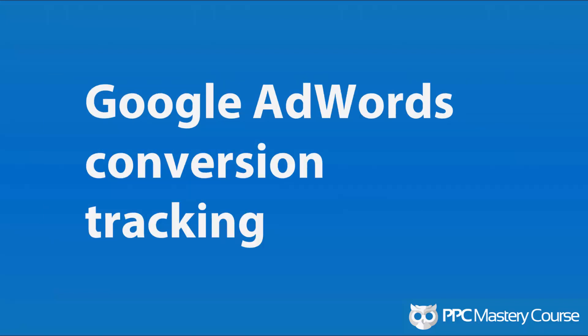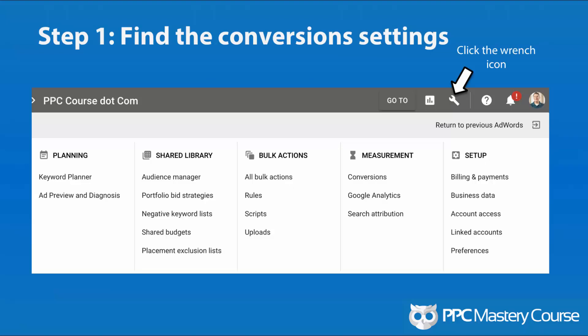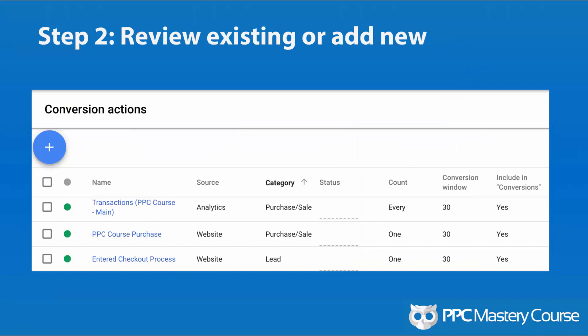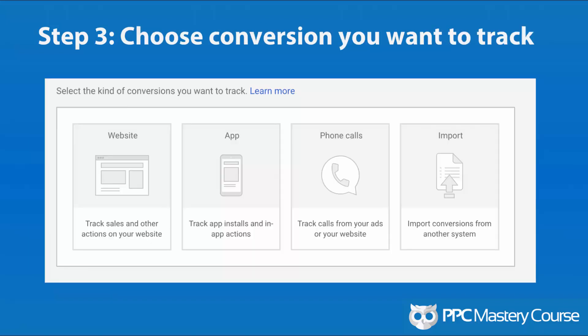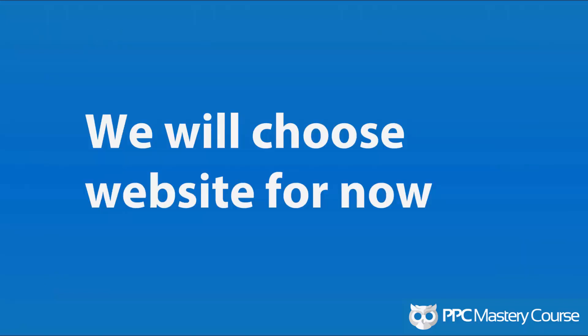Let's go through the steps of setting up Google AdWords conversion tracking. Step one: find your conversion settings in AdWords. This is buried in the new interface under a wrench icon — you click on that wrench and then select conversions. Step two: you're going to review your conversions that exist right now or add new ones. If you're just getting started with AdWords conversion tracking, you're going to click on that blue button to add new ones. Otherwise, if you've been running ads for a while, you can see how things have been working. Step three: if you're creating a new conversion, you're going to choose the conversion you want to track — in this case, we are going to choose a website.